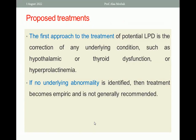What is the proposed treatment? The first approach in case of Luteal Phase Deficiency is to find if it is secondary to a certain disease, like thyroid dysfunction, hypothalamic dysfunction, or hyperprolactinemia — any such etiology should be corrected. But if there is no underlying abnormality, the treatment becomes empiric and is not generally recommended, as mentioned by the American Society of Reproductive Medicine.